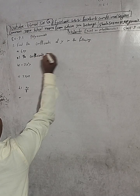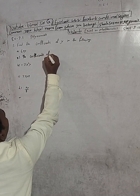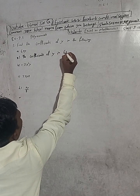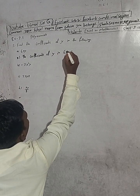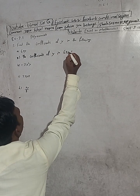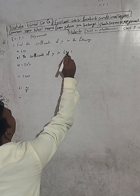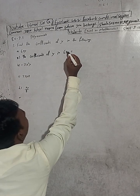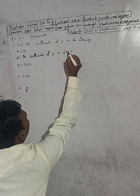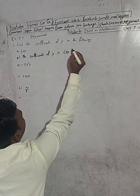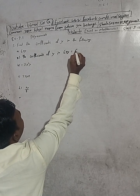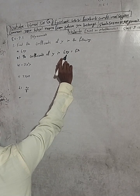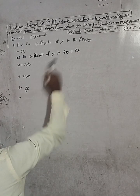First, we have to find the coefficients of y in 6xy. Here you can see — except this y, what is the remaining term? It is 6x. So 6x is the coefficient of y.